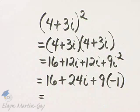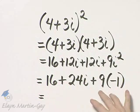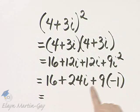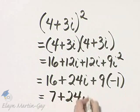And now, do we have any like terms? The answer is yes. This is negative 9, and 16 minus 9, or 16 plus negative 9, that is 7, and then plus 24i.